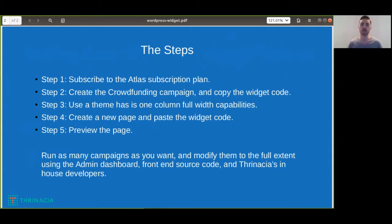Once you subscribe to the Atlas subscription plan, you can create a new crowdfunding campaign and then copy the widget code. Make sure that you're using a theme that has one column full width capabilities if you'd like to add the crowdfunding capabilities with no issues out of the box. If you are not using a theme with one column full width capabilities, it may look a little bit squished on the page and you may have to make some modifications to your WordPress theme.